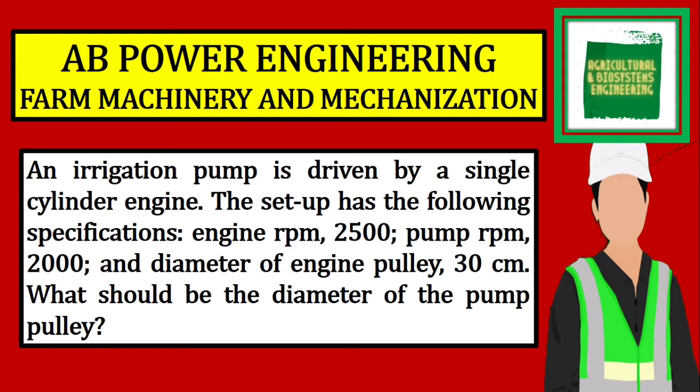An irrigation pump is driven by a single cylinder engine. The setup has the following specifications: Engine RPM is 2500, pump RPM is 2000, and diameter of the engine pulley is 30 cm. What should be the diameter of the pump pulley?